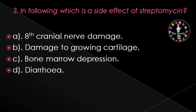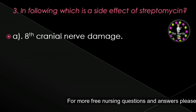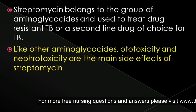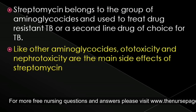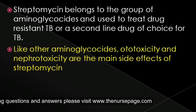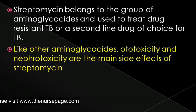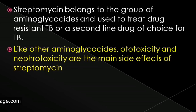Next question: Which is a side effect of streptomycin — 8th cranial nerve damage, damage to growing cartilage, bone marrow depression, or diarrhea? Correct answer is 8th cranial nerve damage. Streptomycin belongs to the aminoglycosides group and is used to treat drug-resistant TB as a second-line drug. Ototoxicity and nephrotoxicity are the main side effects.